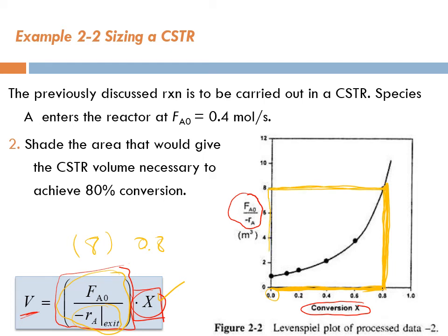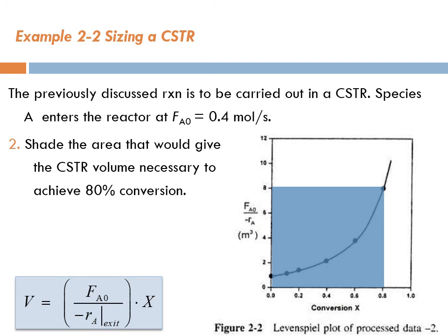This is our rectangle, and this is the area of the rectangle, which is calculated by multiplying the width times the height. So in fact, this shaded area represents the volume of a CSTR.